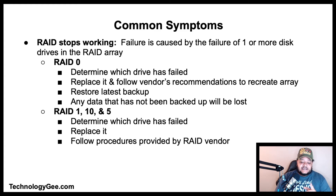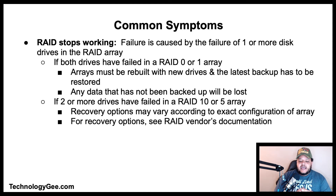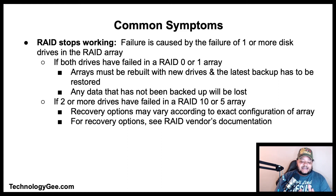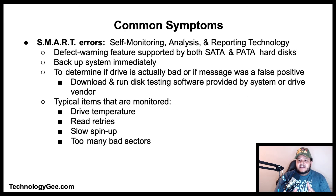For RAID 1, 10, or 5, determine which drive has failed, replace it, and follow the procedures provided by the RAID vendor to rebuild the array. If both drives have failed in RAID 0 or RAID 1, the arrays must be rebuilt with new drives and the latest backup restored — any unbacked data will be lost. If two or more drives have failed in RAID 10 or 5, recovery options vary by configuration, so consult your RAID vendor's documentation.